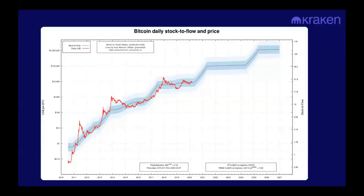I'd highly recommend following Plan B on Twitter — he always has updates on what's going on with the model. It's also interesting to note that altcoins have no valuation model like this. Altcoin prices are more correlated with Bitcoin's price than they are with their own stock-to-flow, meaning altcoins are correlated with Bitcoin's stock-to-flow, not their own. This speaks to the causal mechanism of the credibility of the monetary policy — perhaps altcoins just don't have that same level of established credibility, but maybe in the future they'll gain it.